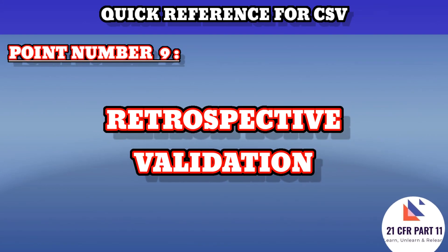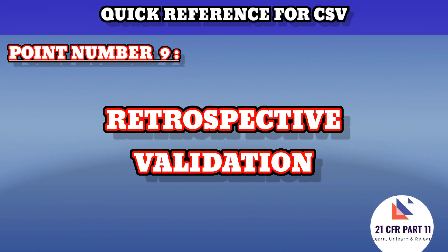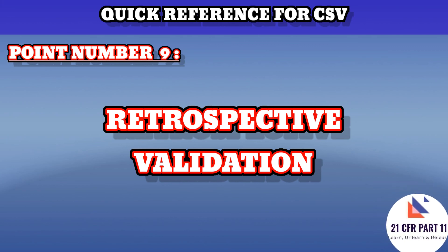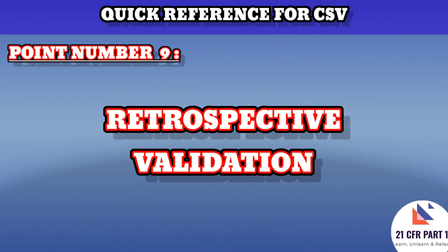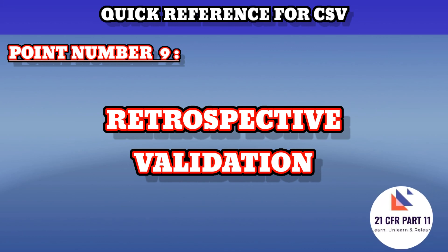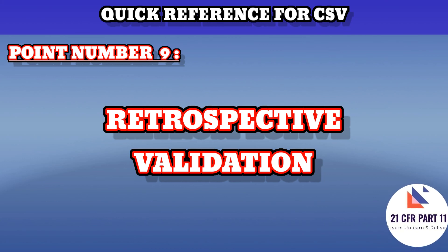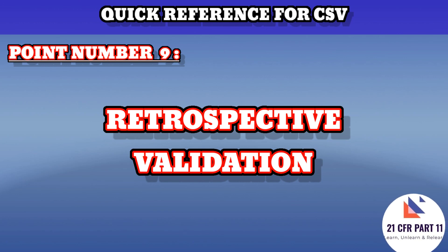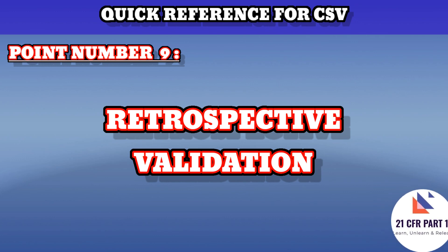Point number nine covers retrospective qualification of equipment and validation of the computer system. FDA requirements and enforcement must be well communicated to users. Approaches for existing systems versus new system validation must be defined. Documenting the system use is very important, and leveraging past experience is essential because it tells you what and how much to test. Maintaining the validated state of the system comes only through retrospective qualification and validation of computer systems.